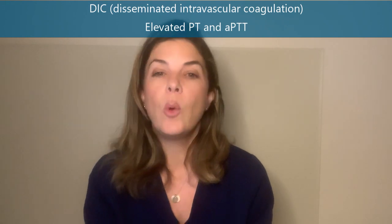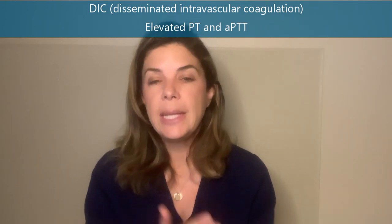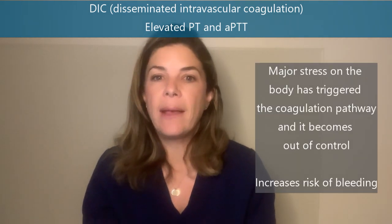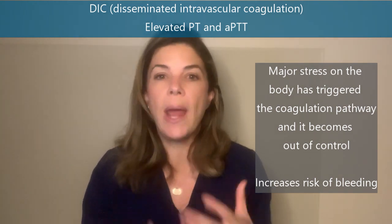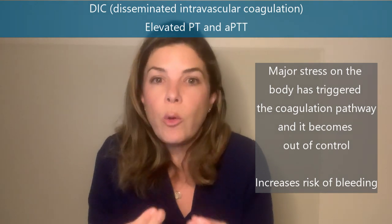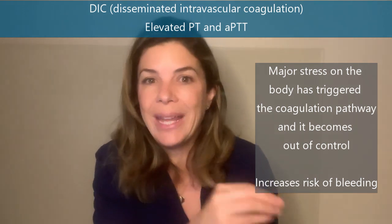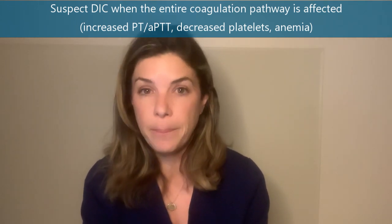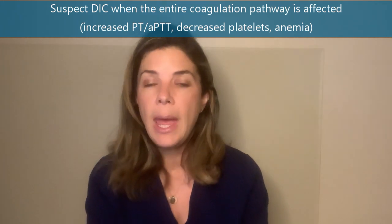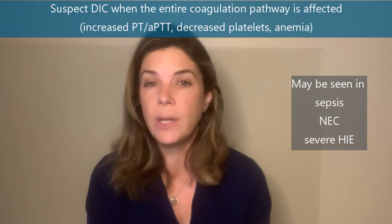Another disease process that can increase both the APTT and the PT is DIC — disseminated intravascular coagulopathy. DIC happens when a really bad stress on the baby causes the coagulation pathways to become completely out of control: they are overstimulated, you end up with lots of little clots everywhere, you're using up all those proteins, and the body is also trying to break down the clots — so you're not only forming clots much quicker but also at increased risk of bleeding. We see DIC pretty commonly in the NICU. You can guess it's DIC when the whole coagulation pathway is affected: APTT and PT going up, platelets going down, babies are anemic, and it's seen in sepsis, NEC, or a really severe HIE.